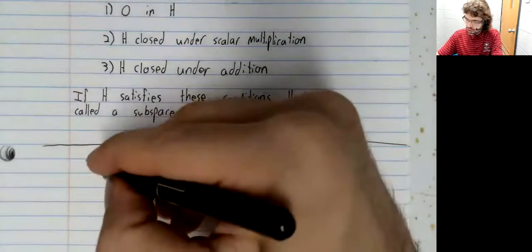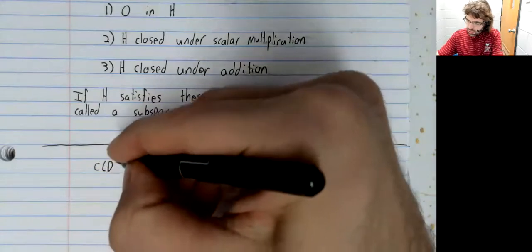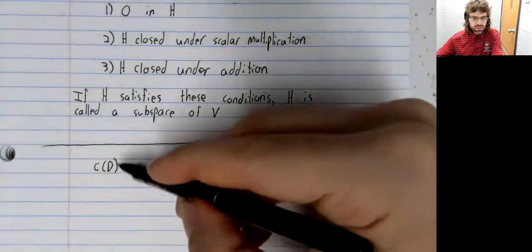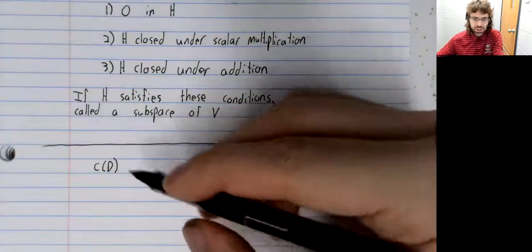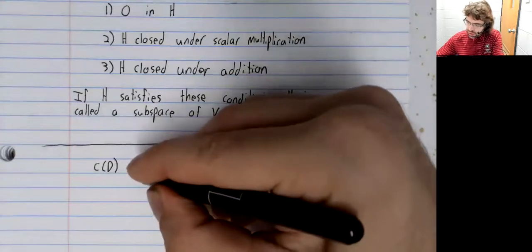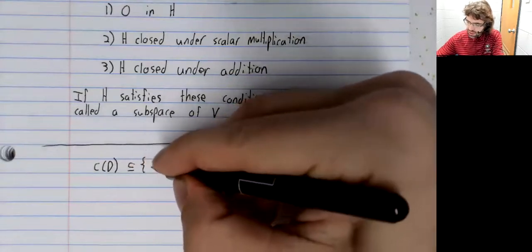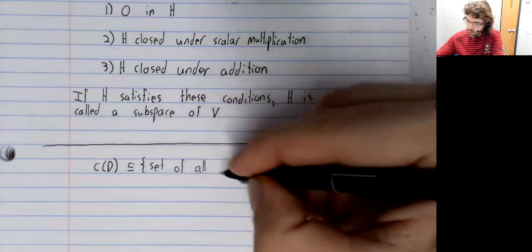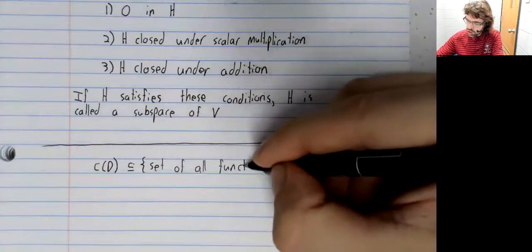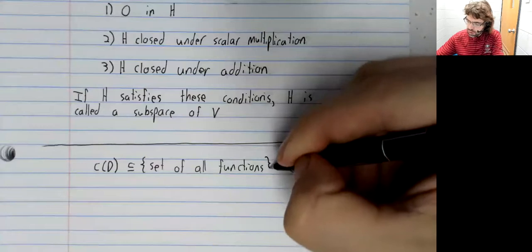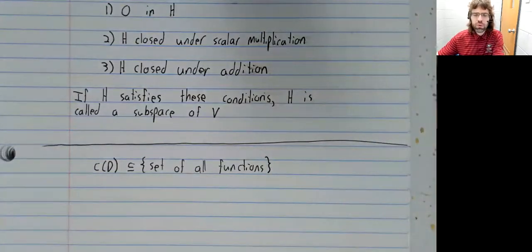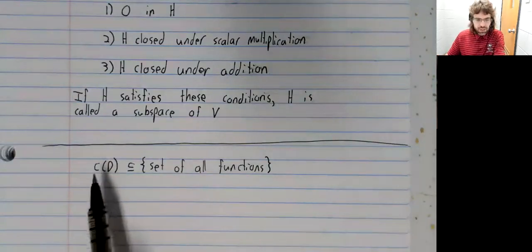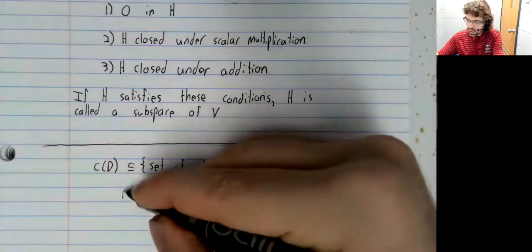So, returning to our example. This set of continuous functions is a subset of the set of all functions, which we know is a vector space. So, for this to be a vector space, we need three things.